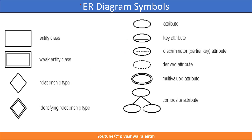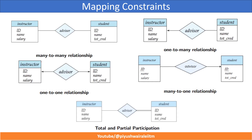This is what we have discussed in the last lecture, that is lecture number 3, that is ER diagram symbols. Please go through it, I have discussed this in detail. Now, this is about mapping constraint. It is a very important part. If you want to understand the conversion of ER diagram into relational schema, this is a very important concept. I have already discussed this in the previous lecture.